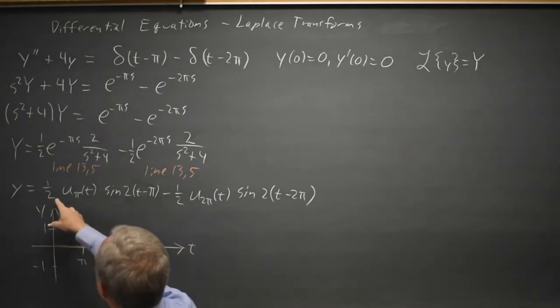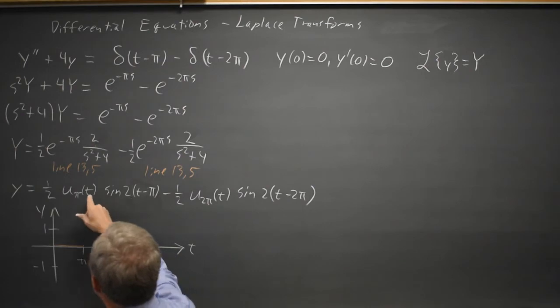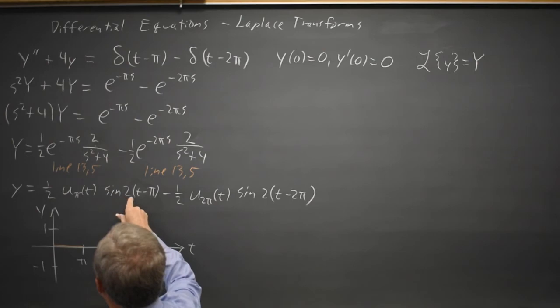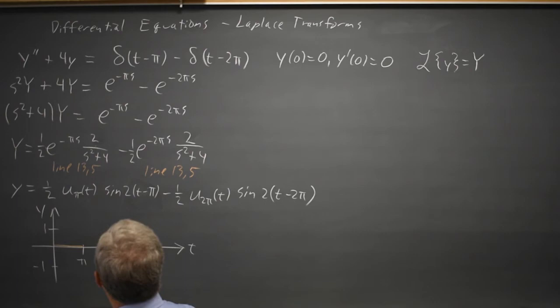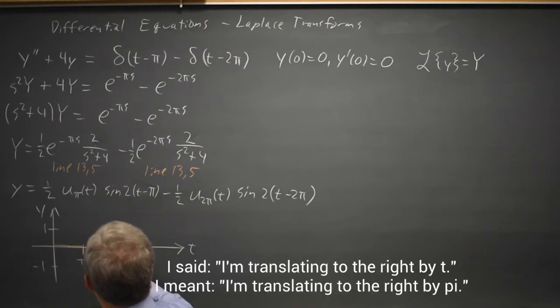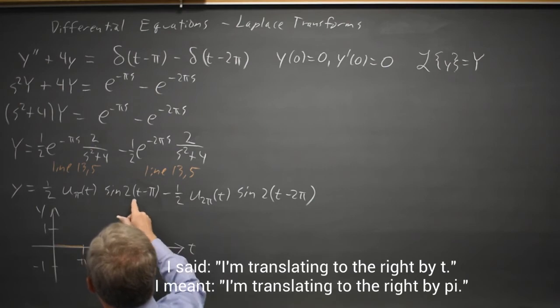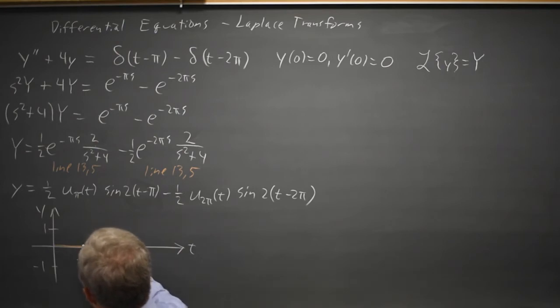And then I get 1 half, and this is a unit step function times the sin of 2 times t minus pi, so I'm translating the sin to the right by t, and the period of the sin is pi. So I get a full cycle with amplitude 1 half, more or less, within artistic license.